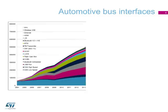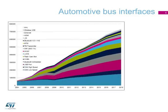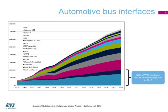There are many bus interfaces used in automotive applications. Some of them are limited to infotainment, whereas CAN is covering a variety of subsystems and is implemented everywhere. As cars get more complex, the number of CAN interfaces will continue to increase.